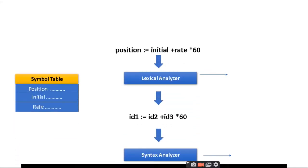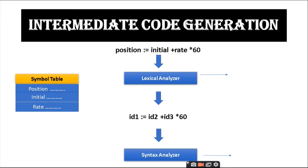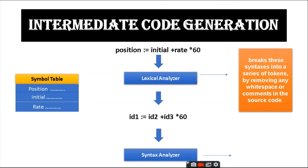Intermediate code generation: after syntactic analysis, some compilers generate an explicit intermediate representation of the source program. We can think of this as a program for an abstract machine. It should be easy to produce and easy to translate into the target program. For example, the expression position = initial + rate * 60 goes to the lexical analyzer, which breaks it into a series of tokens — id1 = id2 + id3 * 60 — where id1 represents position, id2 represents initial, and id3 represents rate.